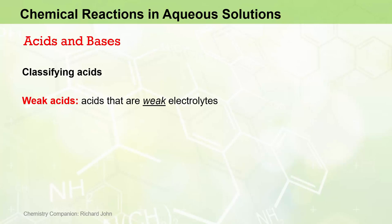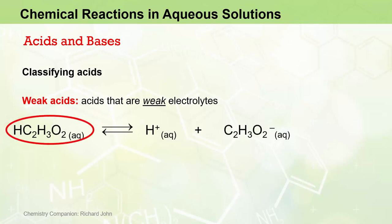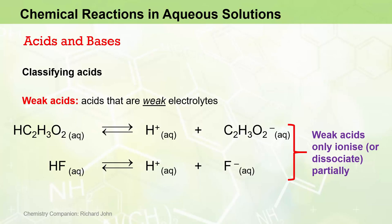Weak acids are acids that are weak electrolytes. You may recall that we used acetic acid as an example of a weak electrolyte, and it dissolves in water to form the H-plus ion and the acetate ion. You may also recall that the presence of the double arrow in this chemical equation indicates that the ionization process is reversible, and that at the same time that acetic acid molecules dissociate to their ions, the ions are recombining to form the molecule. HF, or hydrofluoric acid, is another example of a weak acid.